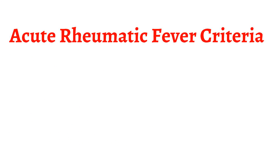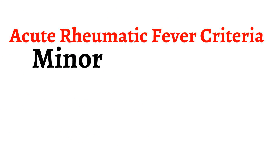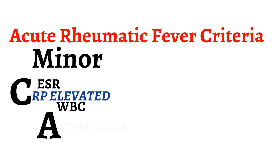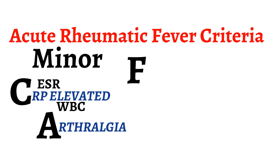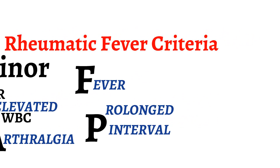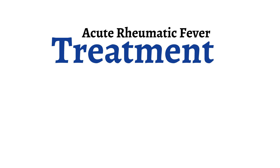The minor criteria is represented by CAF-P. C stands for CRP elevation, which also includes an elevation in the ESR or in the white blood cell count. A stands for arthralgias, F stands for fever, and P stands for a prolonged PR interval on an EKG. Acute rheumatic fever is diagnosed when there is evidence of a group A strep infection and the patient meets the criteria for diagnosis.